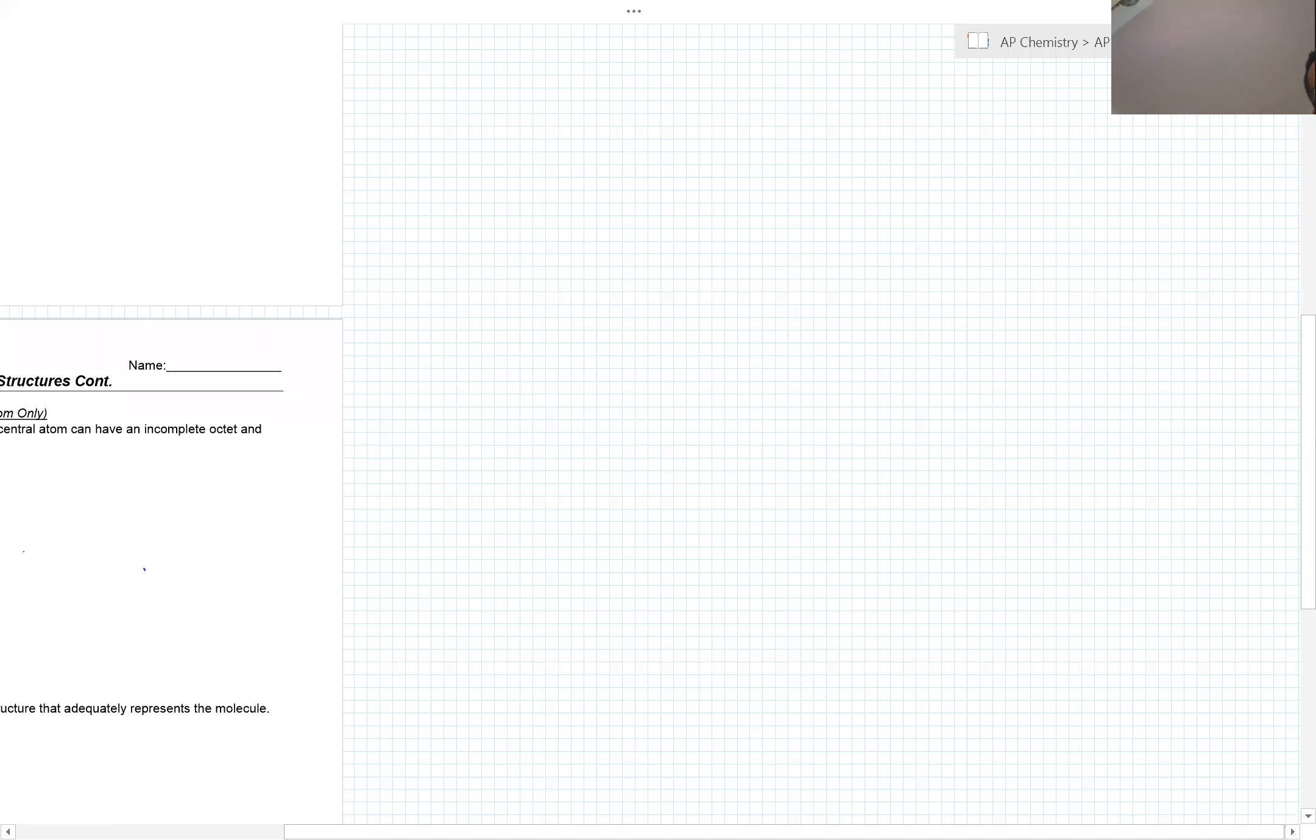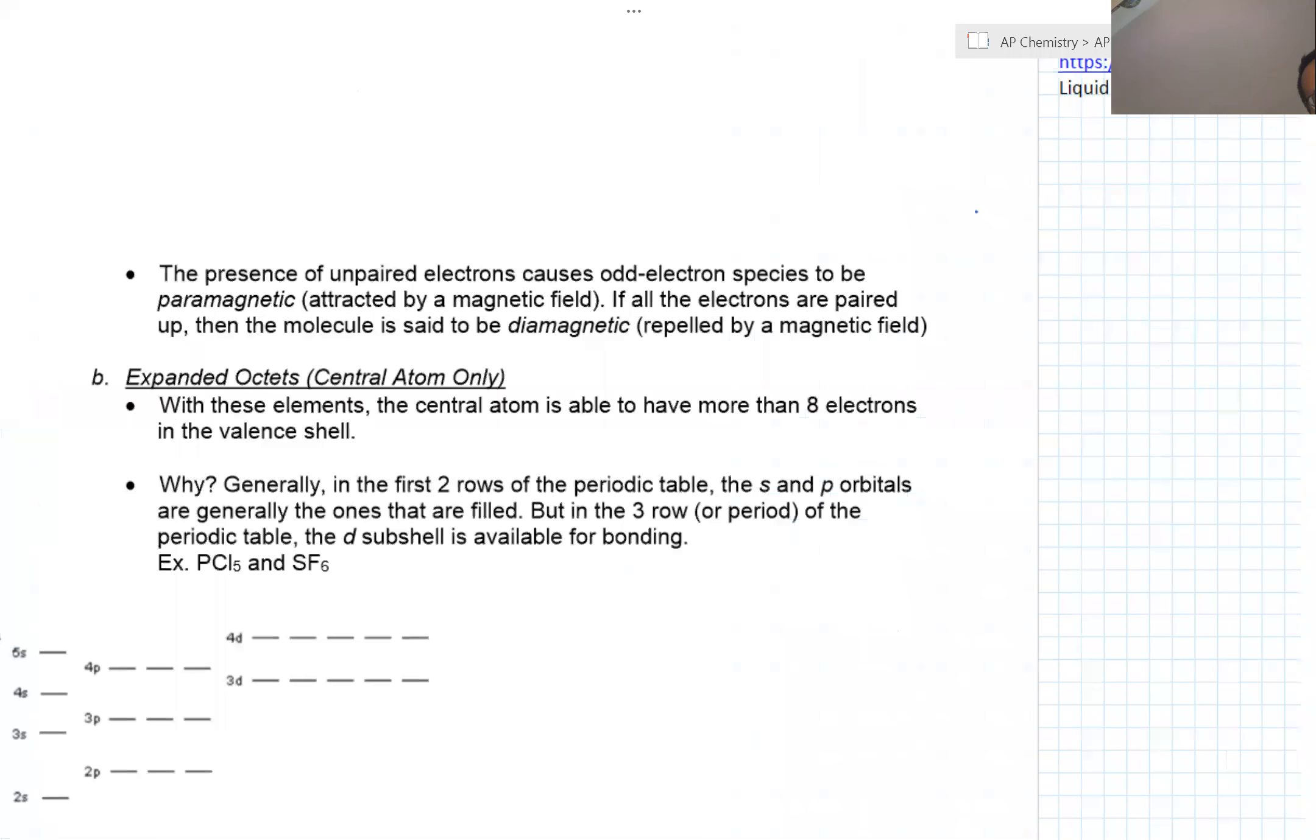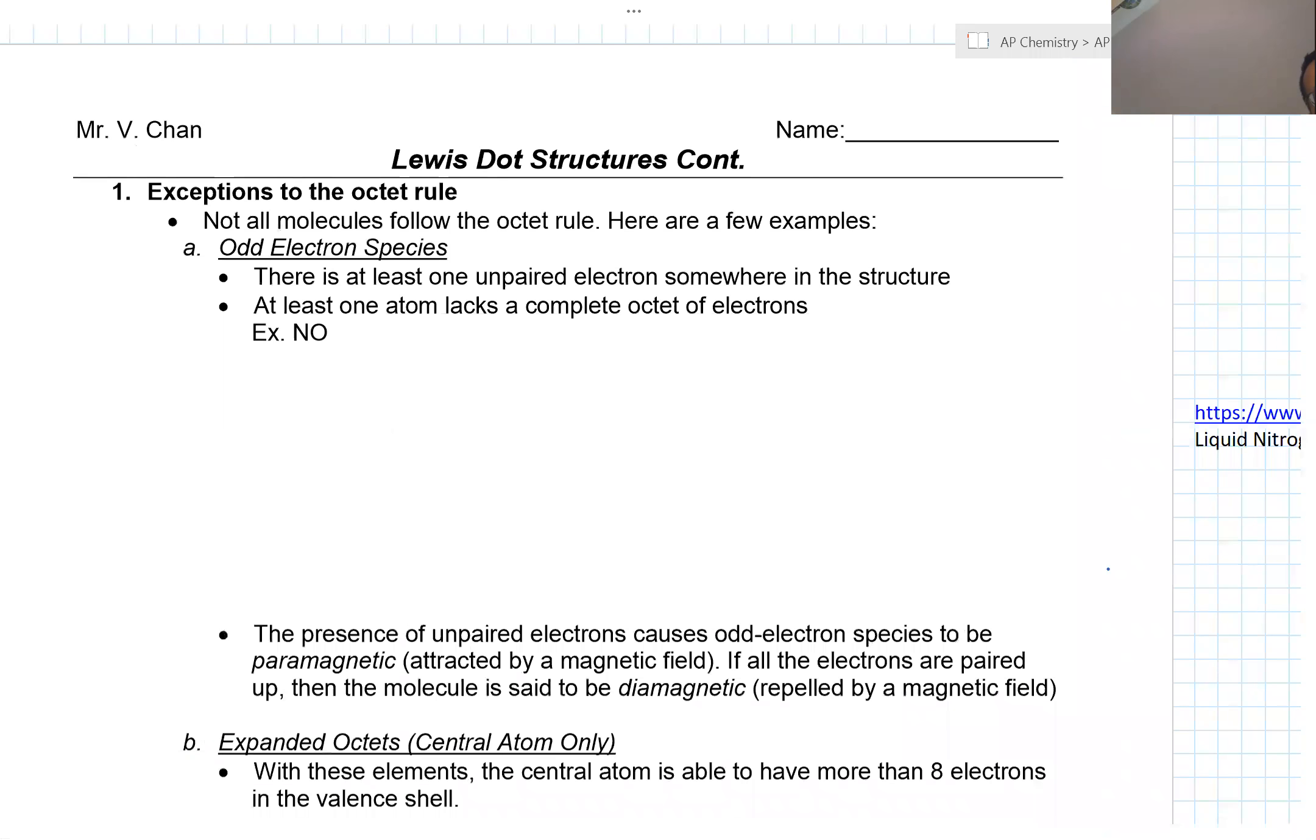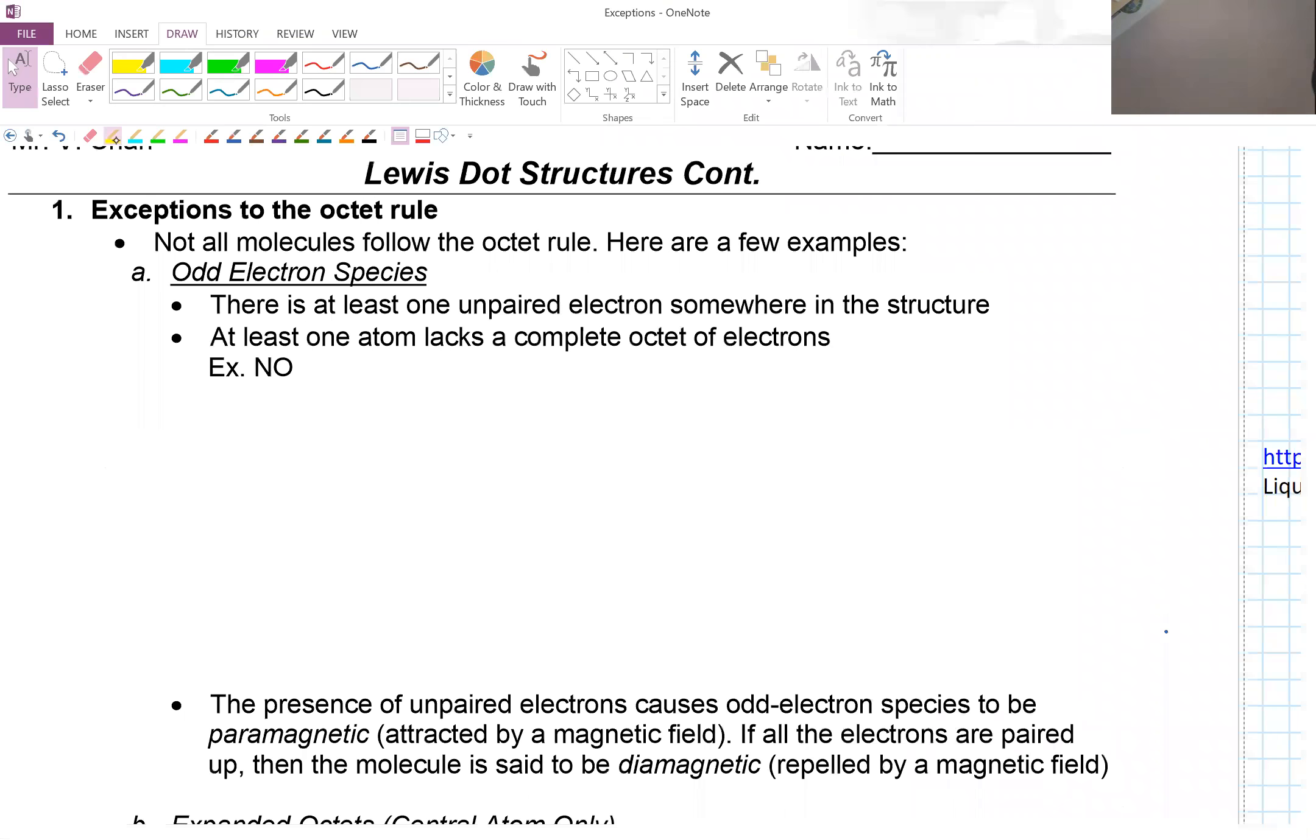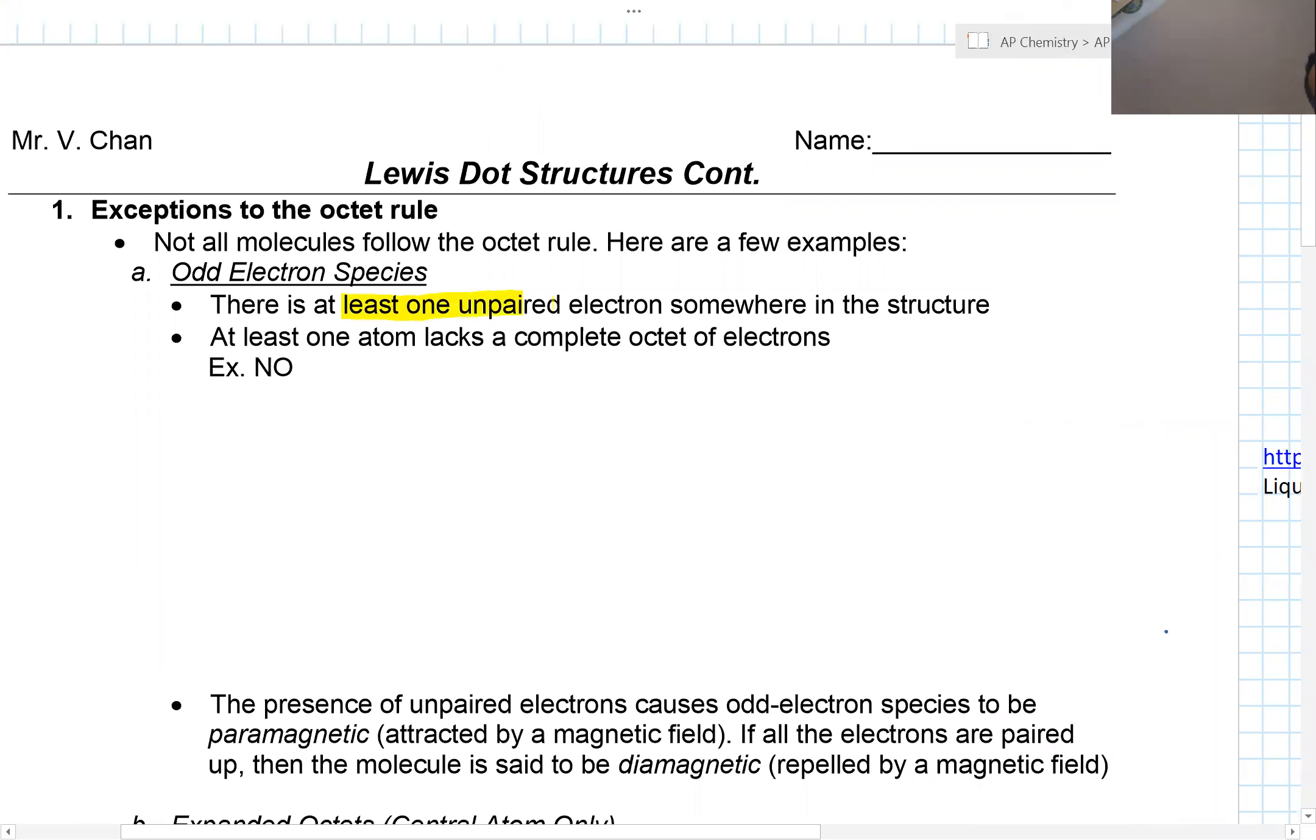The Lewis dot structure is not the end-all be-all. One of the exceptions for the Lewis dot structures is something called the odd electron species. What you have is you have at least one unpaired electron somewhere in the structure, and at least one atom lacks a complete set of electrons.